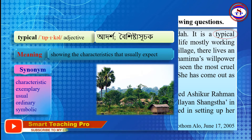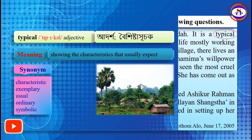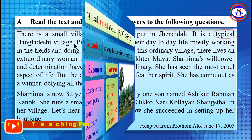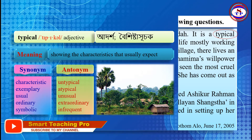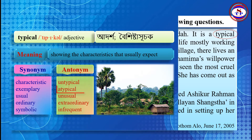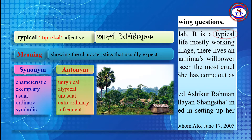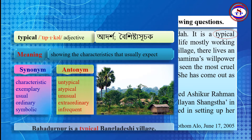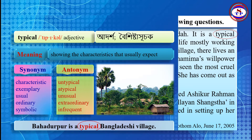The antonym or opposite words of typical are: untypical, atypical, unusual, extraordinary, and infrequent. These words express the opposite meaning of typical. Look at the example: Babanipur is a typical Bangladeshi village.